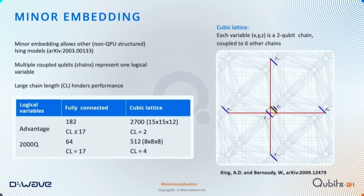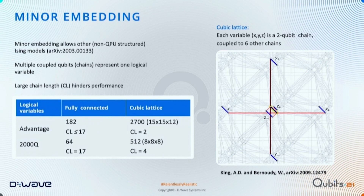We've made quite big advances from the D-Wave 2000Q to Advantage in terms of the scale of problems we can embed. Two cases are shown: the fully connected problem and a cubic lattice problem. The cubic lattice problem is particularly favorable because we can use only two qubits per variable, allowing us to study relatively large problems. The connectivity pattern is also very regular, and gains in performance over cubic lattices are shown in the cited paper.